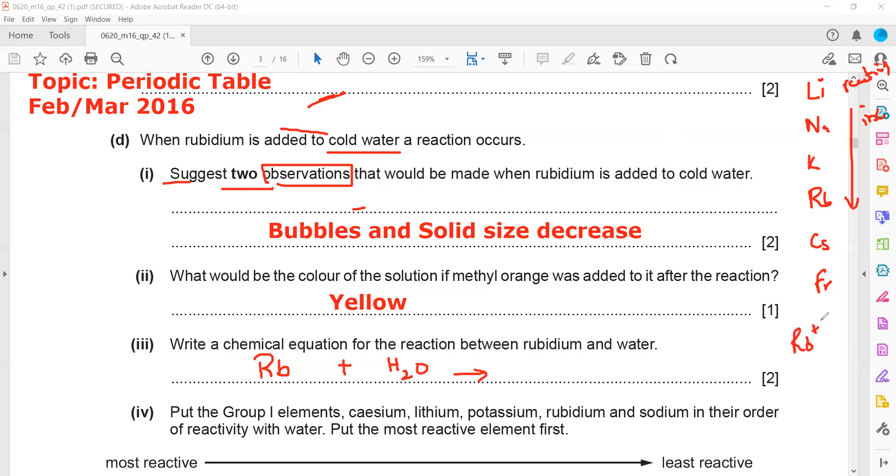Rubidium is group one, so valency plus one, and hydroxide is a molecular ion minus one. So when we cross multiply, this will be rubidium hydroxide RbOH. And then hydrogen gas is there. Hydrogen cannot exist as monoatomic, so it is always diatomic, so H2.